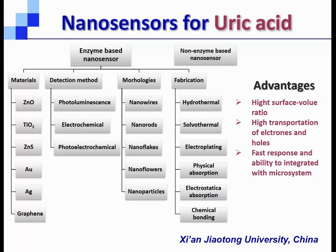A lot of nanosensors for uric acid have been reported, like zinc oxide, zinc acetate, titanium oxide, or gold nanoparticles with different morphologies, and generally with detection methods such as photoluminescence or electrochemical methods. But the photoelectrochemical method is rarely used to detect uric acid in reported papers.